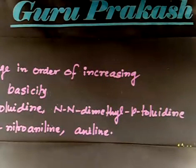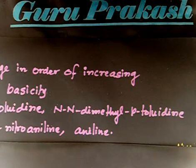So you have para-toluidine, dimethyl-para-toluidine, para-nitroaniline, and aniline. You have four compounds and you have to compare their basicities. This is an easy one, you can try this.